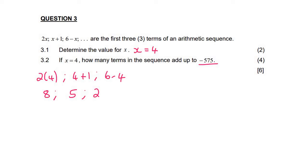So we can definitely see that this is arithmetic, where we are minusing 3 each time. So they say, how many terms add up to minus 575?